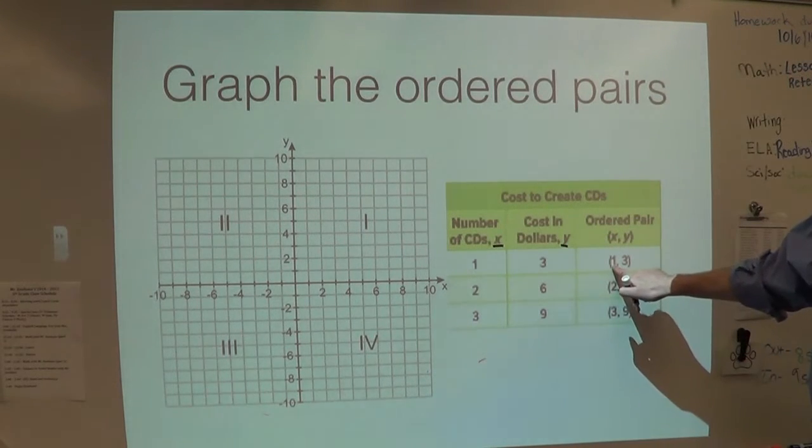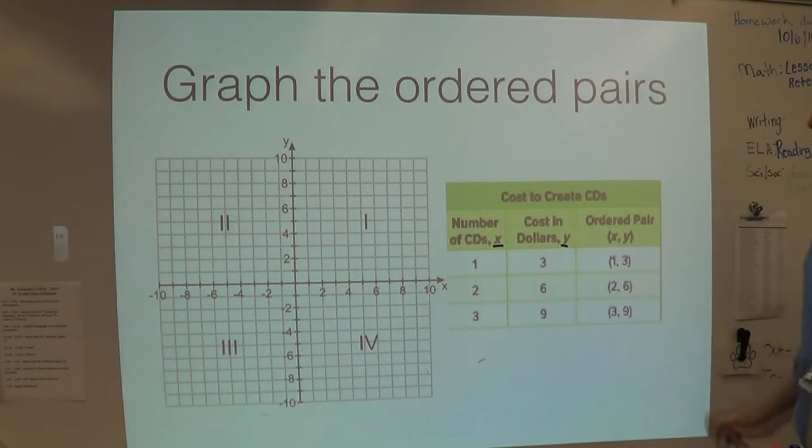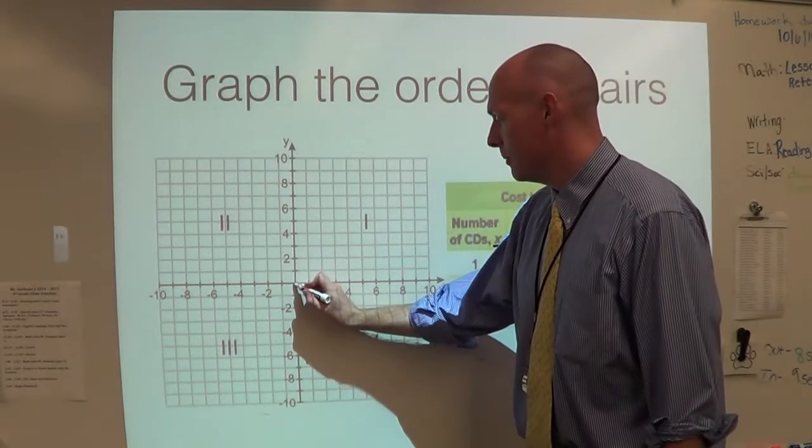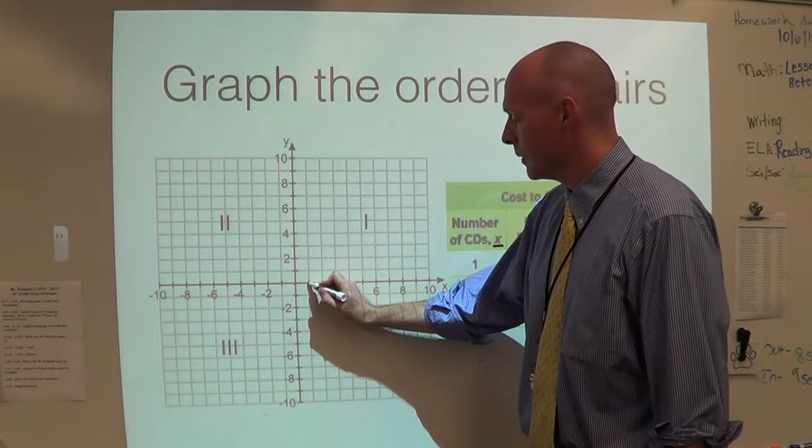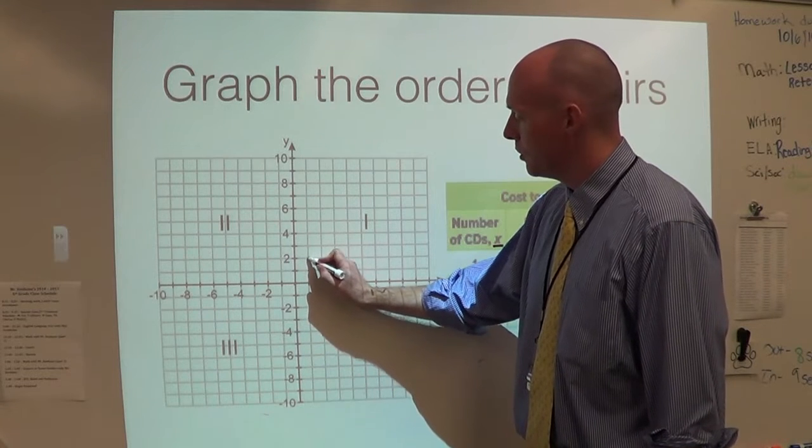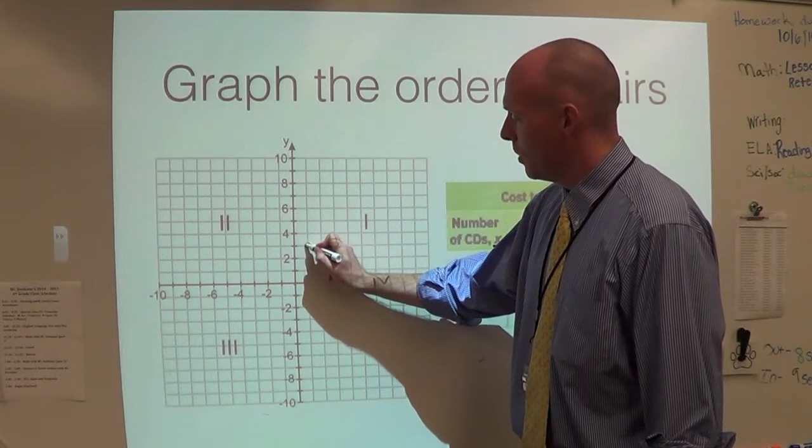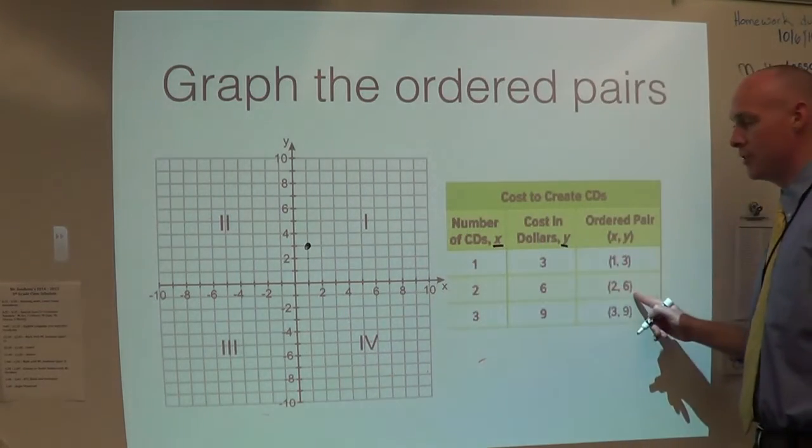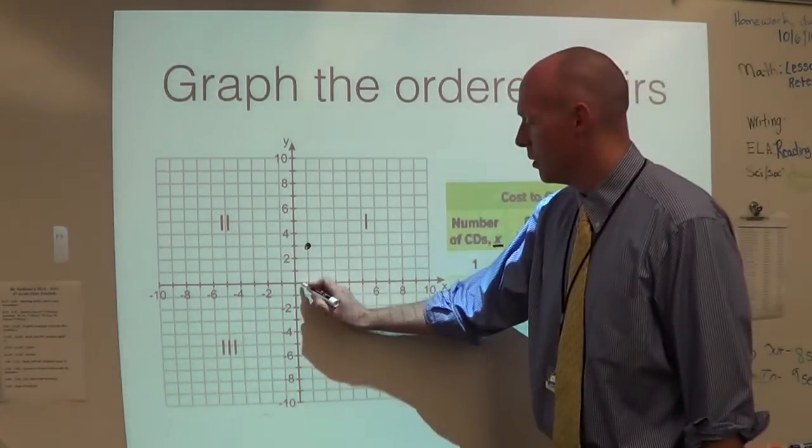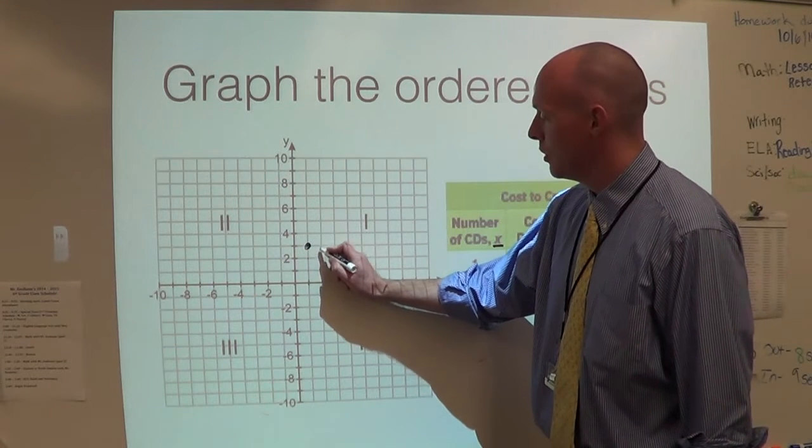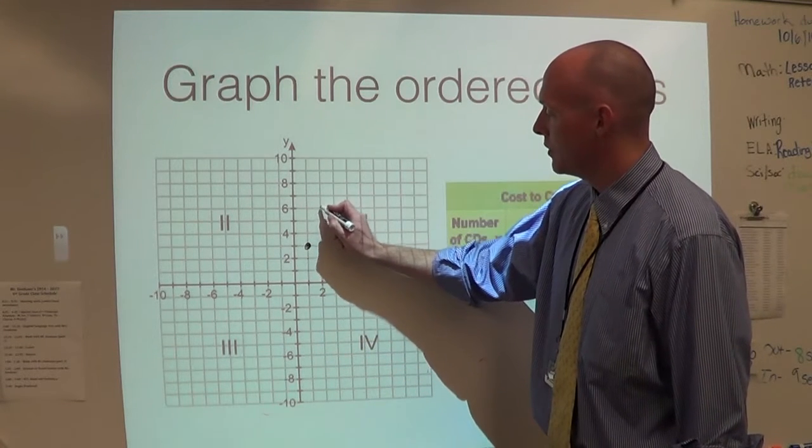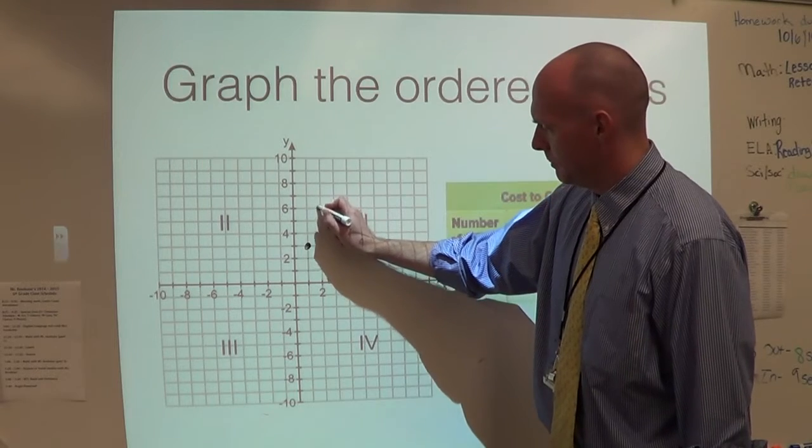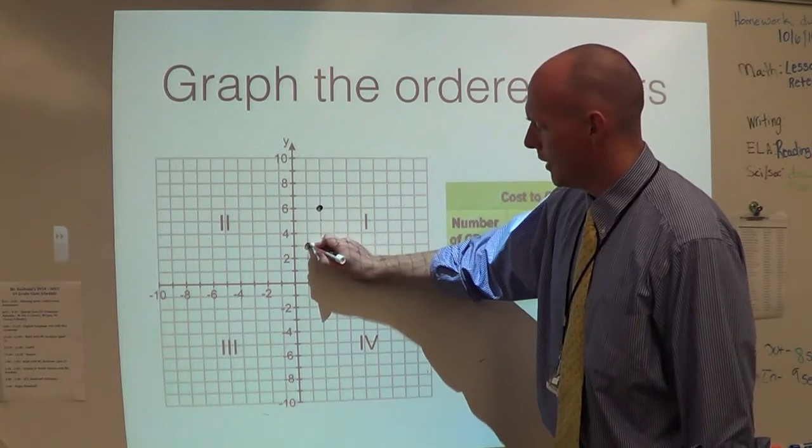Here we go. My first ordered pair is one, three. So I start at my origin, I go to one, and I go one, two, three. So one, three is there. My next is two, six. One, two, and one, two, three, four, five, six. And I darken my point there.